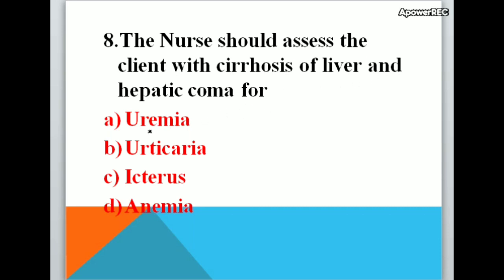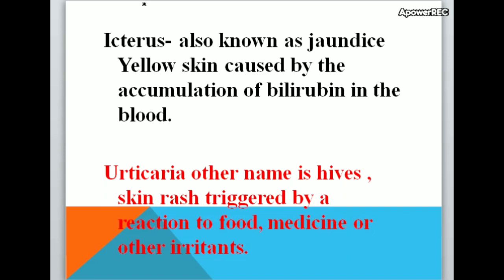Next question: The nurse should assess the client with cirrhosis of liver and hepatic coma for — A. uremia, B. urticaria, C. icterus, D. anemia. Correct answer is icterus. Icterus, also known as jaundice, is yellow skin caused by the accumulation of bilirubin in the blood. Urticaria, also known as hives, is a skin rash triggered by a reaction to food, medicine, or other irritants.